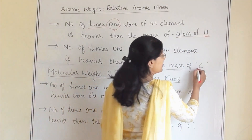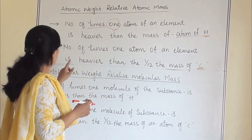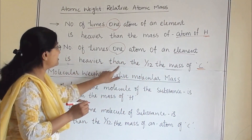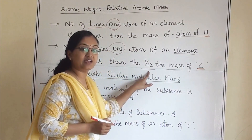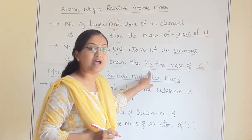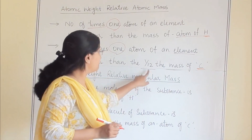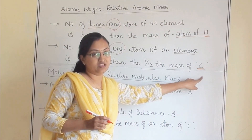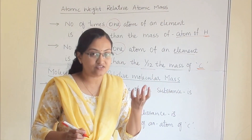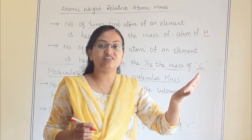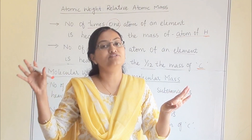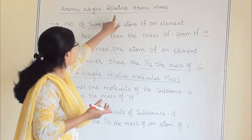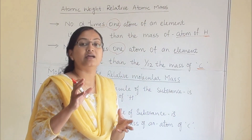If we compare against carbon, how does it change? The number of times one atom of an element is heavier than one-twelfth the mass of carbon. Why one-twelfth? Because one atom of carbon has a mass of 12. So we take one-twelfth of the mass of the carbon atom. If any element's atom is three times heavier than one-twelfth the mass of carbon, then you are finding the relative atomic mass for that particular element.